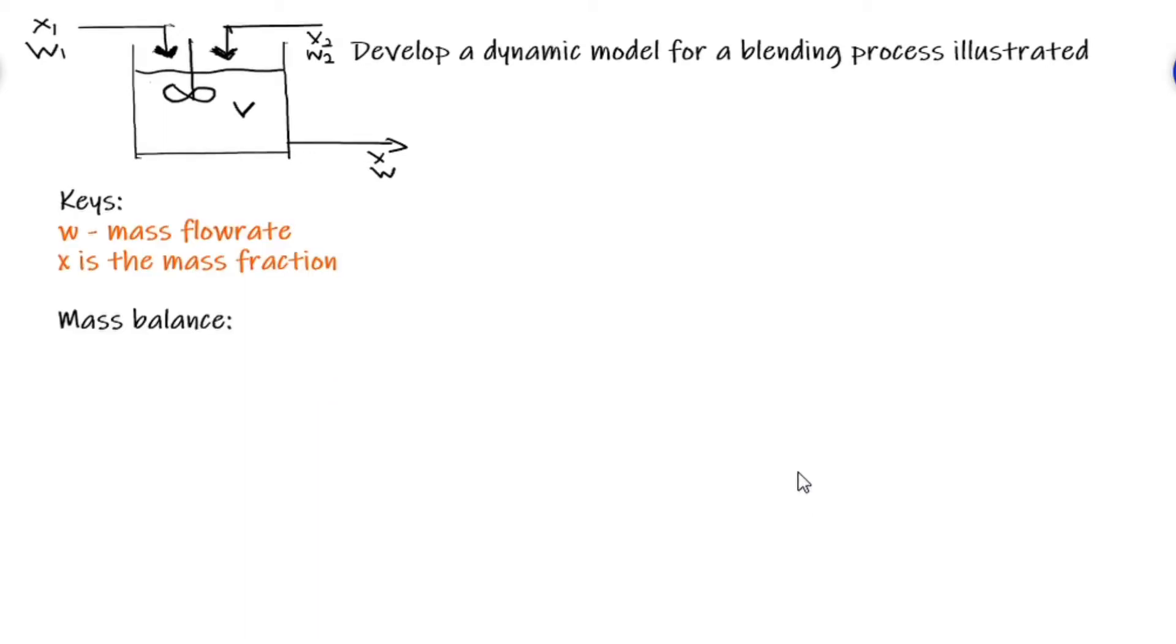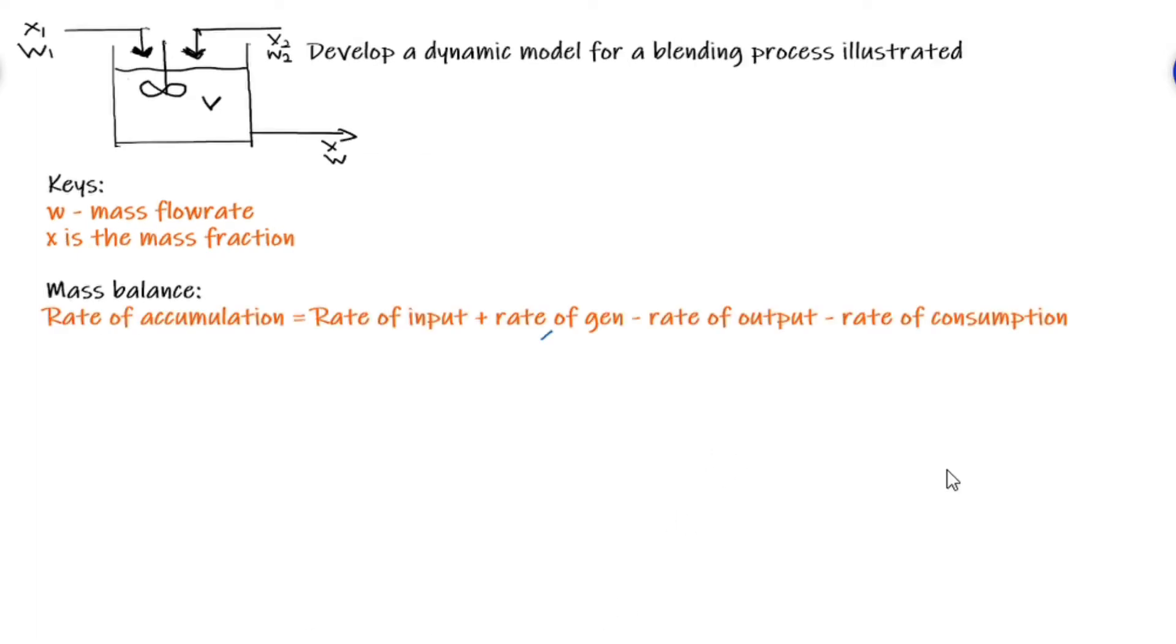Let us develop a dynamic model for this blending process illustrated above. With the key components, we can assume that W is the mass flow rate and X being the composition of the component in each stream.